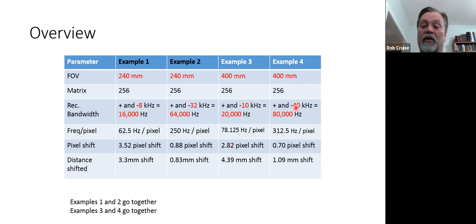Example four, we go to 40, which is 80,000 kilohertz, 0.7 pixel shift, much better with a 1.09 millimeter shift here. Again, this is much better for chemical artifact. You have reduced the appearance of chemical artificial artifact. However, you have increased the number of signals you're getting from your noise. So your signal to noise ratio, since your signal pretty much stayed the same, but you are including more noise, the ratio between the two has now gone down because of that inclusion of more noise.